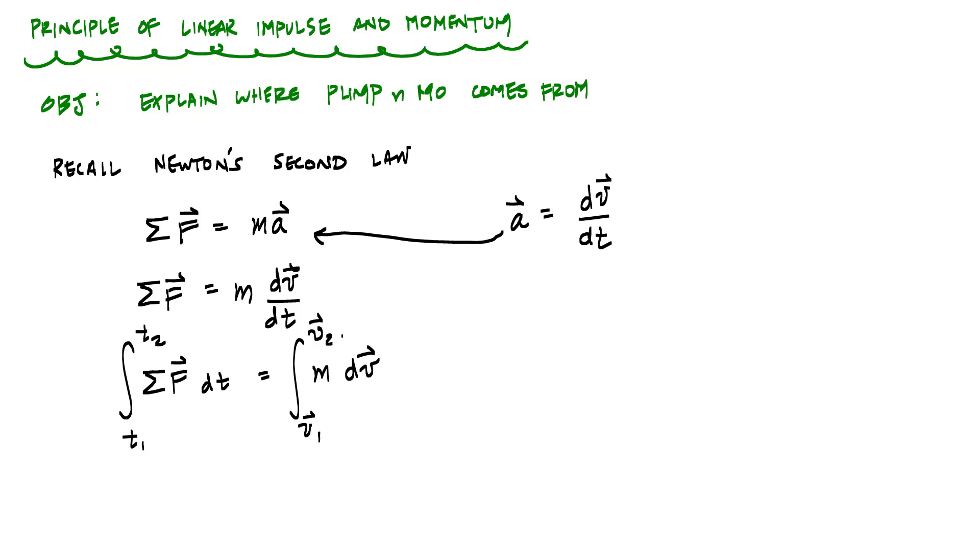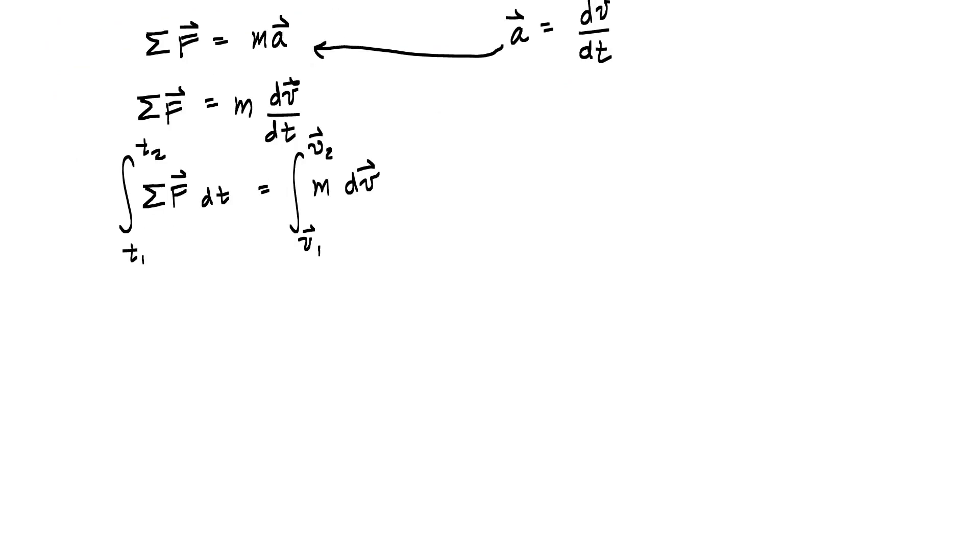And when I go ahead and evaluate this some more, I know that what I have here is this force times time on the left. And this force times time, which has units of like Newton seconds or pound seconds, is an impulse. It's like a punch. This is the sum of all the impulses.